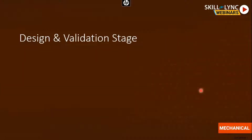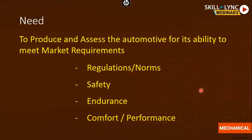After the concept stage, you have the design and validation stage. Automobiles cannot simply be produced and sold — unlike a mug or a pillow — because there are many restrictions and considerations, involving a lot of investment in money and time. Four key things must be considered: first, the regulations and norms of the country where you are selling; second, the safety features of the car; third, the endurance of the car; and fourth, the comfort and performance of the car.